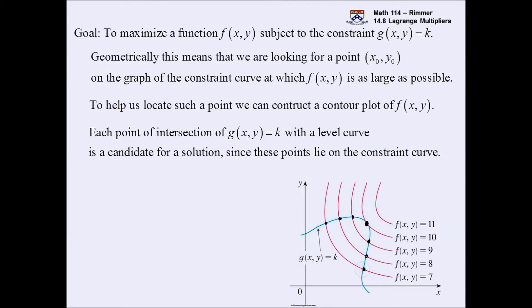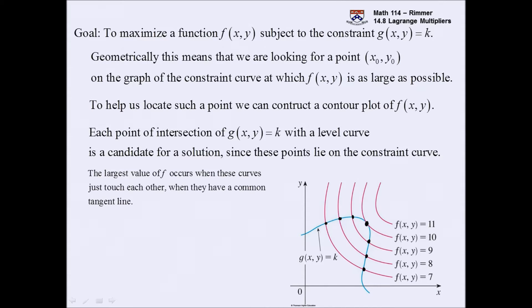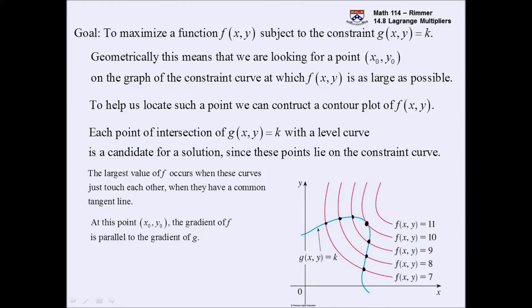The other intersections are at lower heights if we're maximizing. The key insight is that the largest value of your function occurs not just where the two curves touch each other, but where they have a common tangent line. The tangent line to the curve g is the same as the tangent line to the level curve — they share that in common. At the point where the function is as large as possible, they have common tangents.